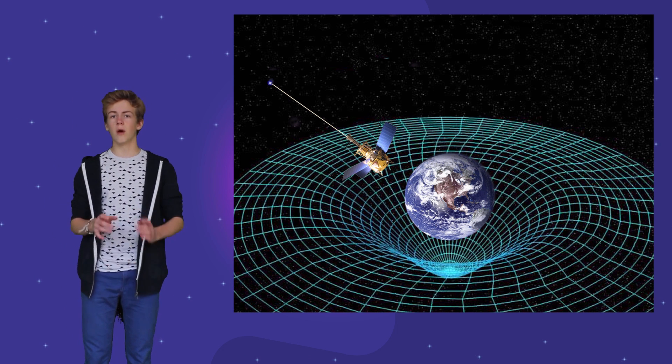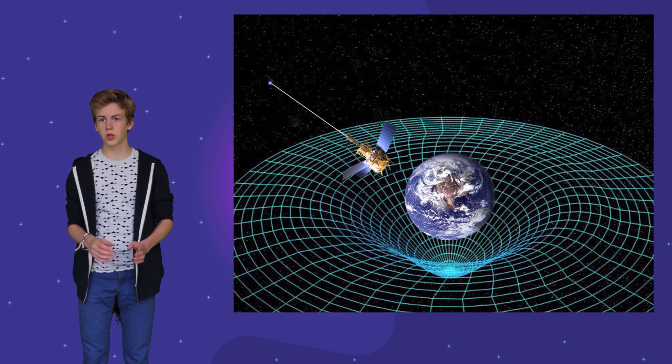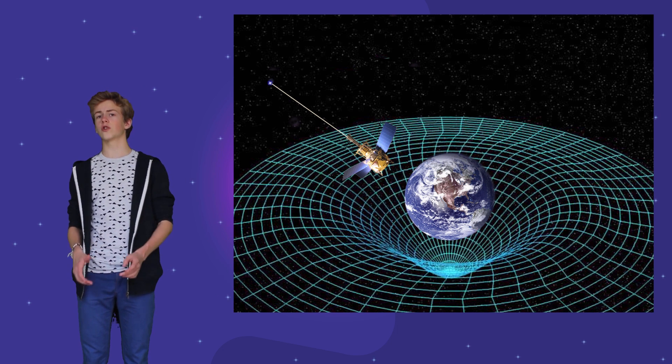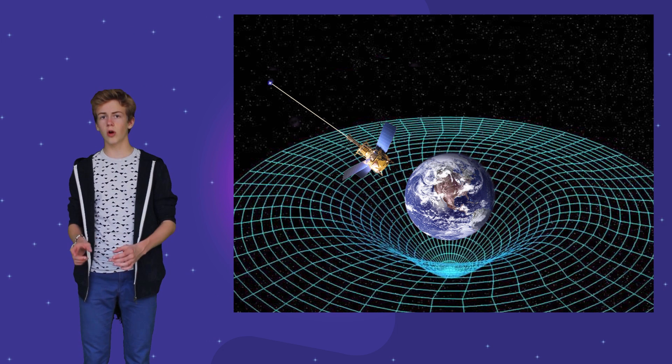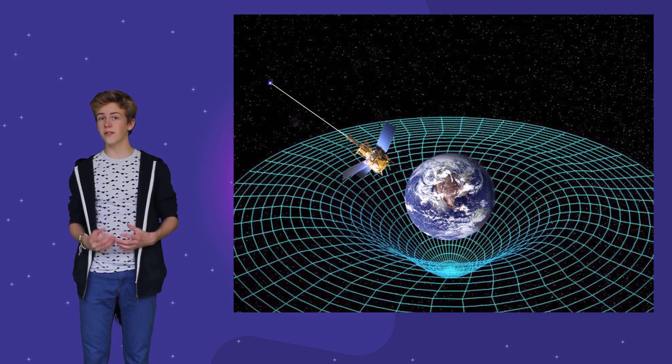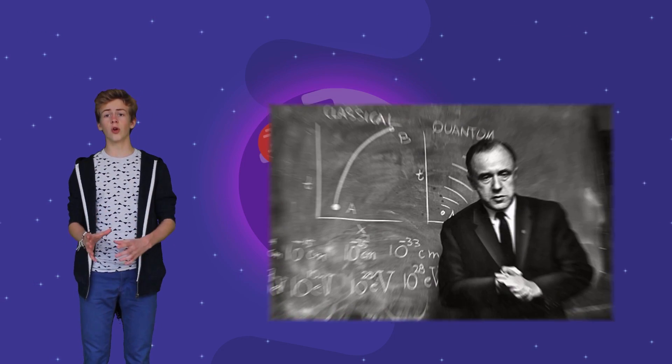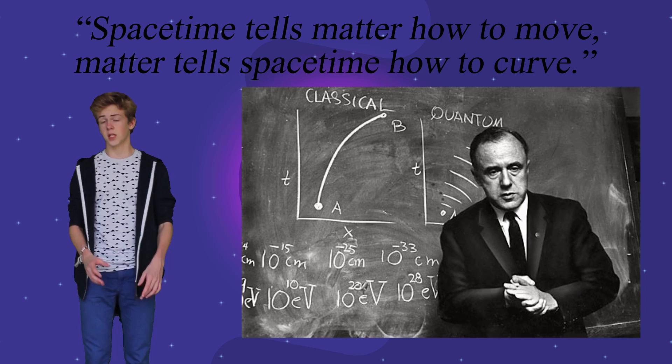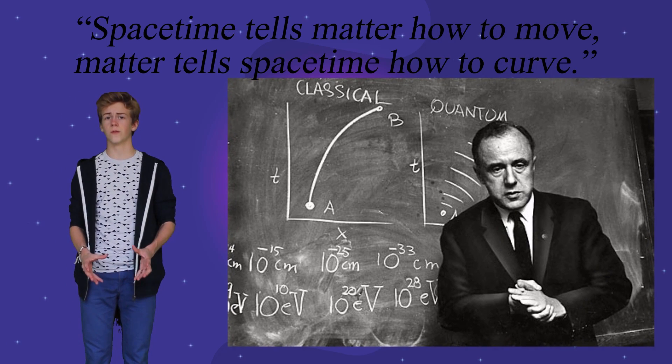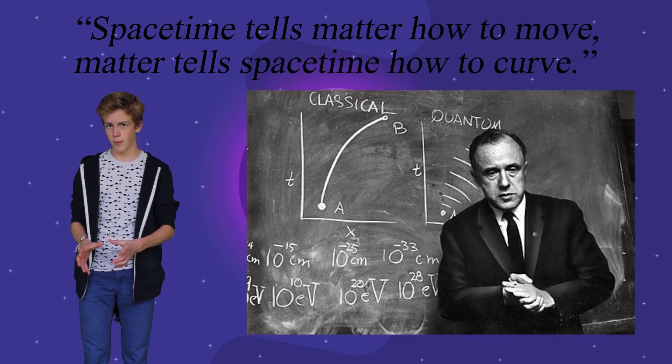Einstein believed that mass causes space-time to curve. The curvature of space-time is what causes the effect that we perceive as gravitation. As John Archibald Wheeler once said, space-time tells matter how to move. Matter tells space-time how to curve.